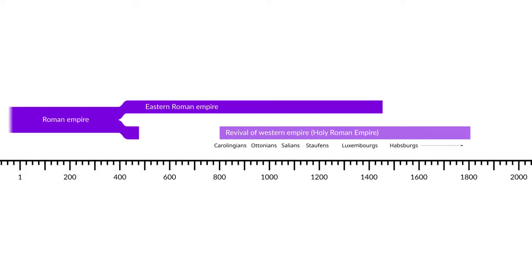That branch of imperial Roman claimants continued down to 1806. So if we follow the line of the Holy Roman Emperors, then the fall of Rome happened in 1806, when Francis II abolished the office of Holy Roman Emperor. But no one ever says the fall of Rome happened in 1806.